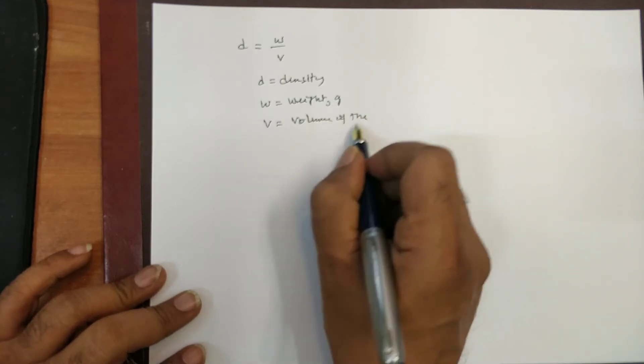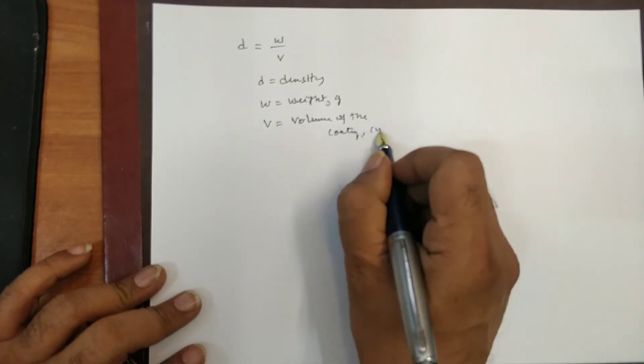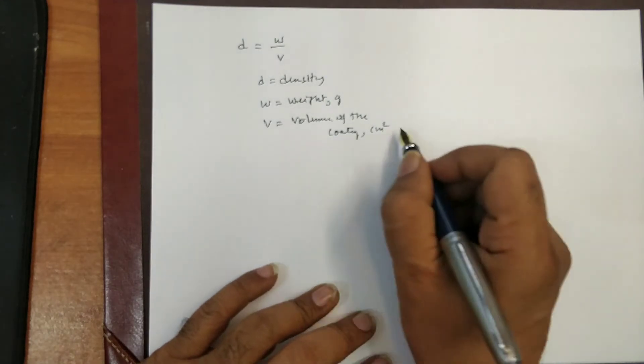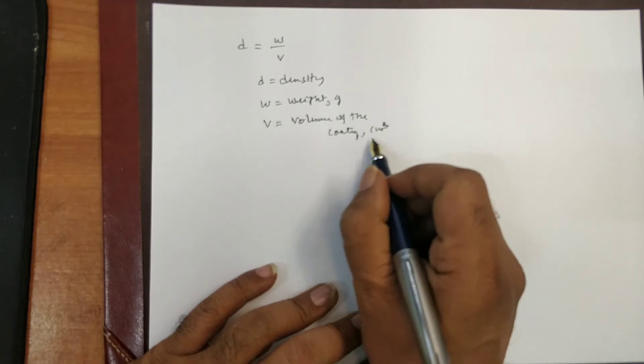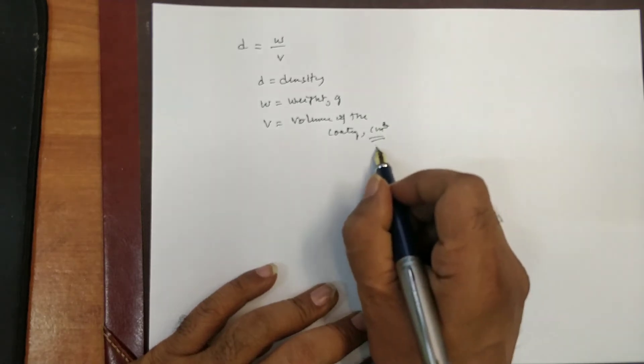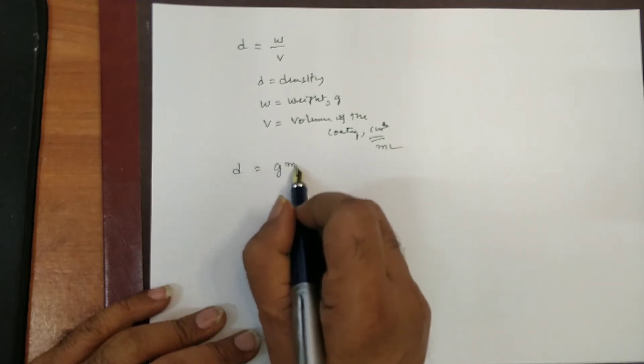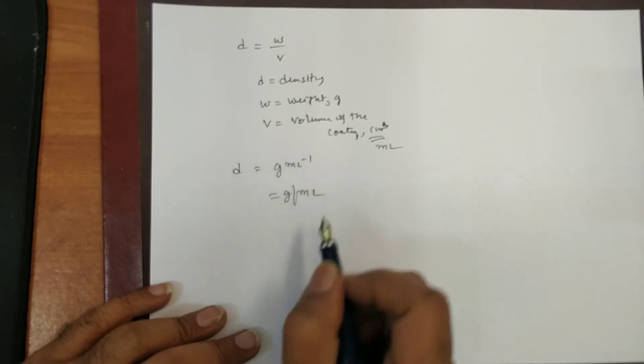Let me consider volume of the coating in, you can call it in square centimeter also. So, gram per square centimeter. I mean, not square, cubic centimeter, cc. Or one cubic centimeter is nothing but ml. So, the density is given in terms of gram per ml. Okay. You can also mention like this, gram per ml.